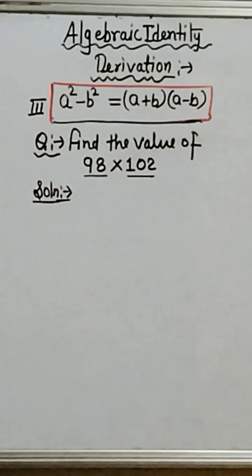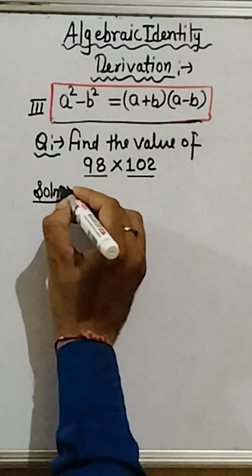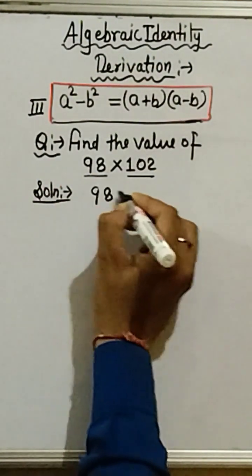So, here we are going to apply algebraic identity. How can we apply? Then 98 into 102.